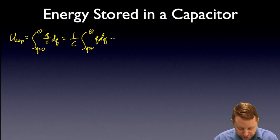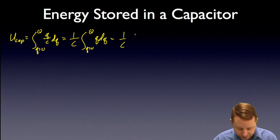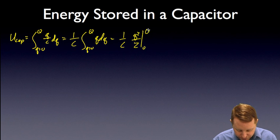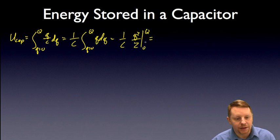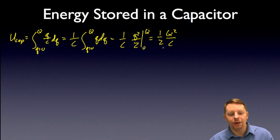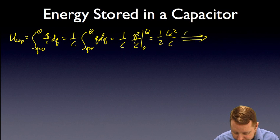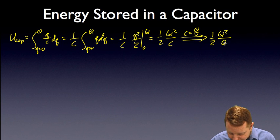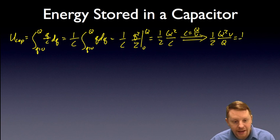That's a pretty straightforward integral, so that becomes one over C times Q squared over two, evaluated from zero to capital Q, which becomes one half Q squared over C. But if you recall, C equals Q over V, so this becomes one half Q squared over C, which is Q over V, and I end up with one half Q V.